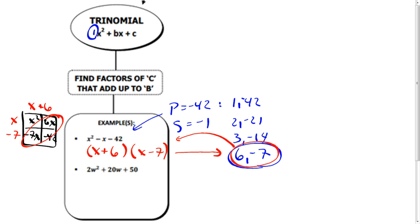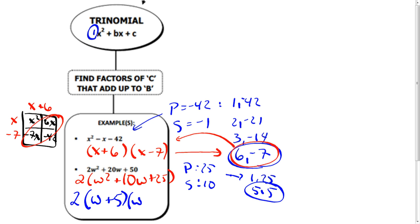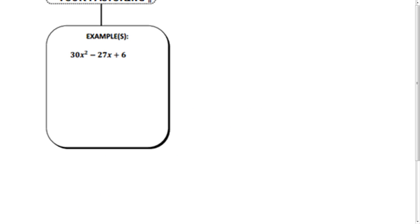On the second one down here, again look for GCF—2, 20, 50—I can pull out 2. Product of 25, sum of 10, so I've only got two options here: I've got one and 25, and I have five and five, so those would be the ones that I would use. Any greatest common factor is still going to stay out on the side, but you're going to get this and then you're done.